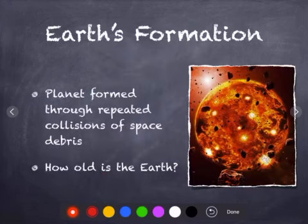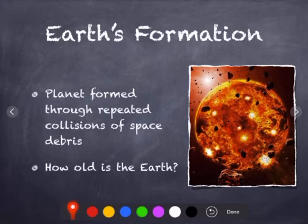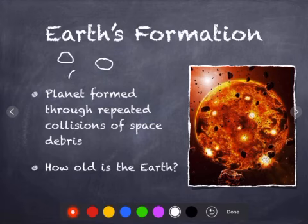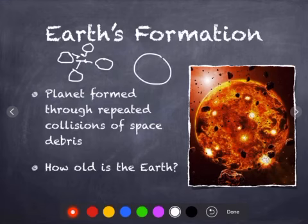Now let's talk about how the Earth formed. Early Earth's formation involved multiple collisions of space debris. There were many pieces of debris that collided together, forming bigger pieces, and kept colliding to form what we know as Earth. During this process, a lot of molten rock was being formed.